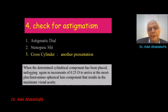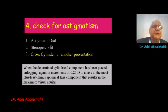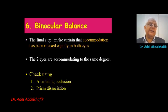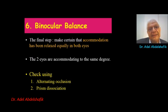Once the determined cylinder is reached, we start to unfog the patient by removing one quarter of the plus sphere at a time, gradually, until we reach the highest plus or least minus lens. Then we recheck that the sphere is at the proper endpoint using the duochrome test. Lastly, we need to check that we have a binocular balance to be sure that accommodation is equally relaxed in both eyes.